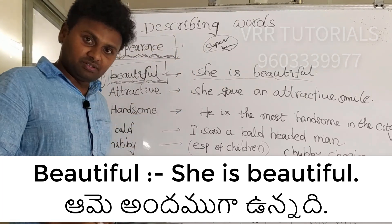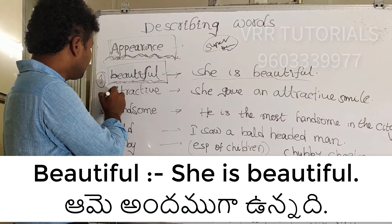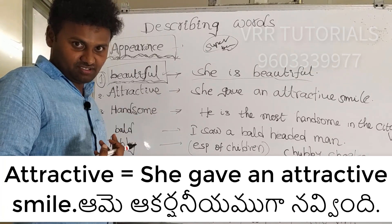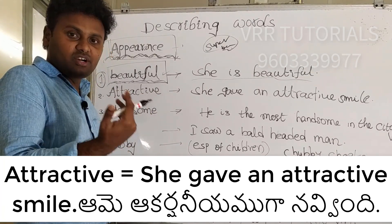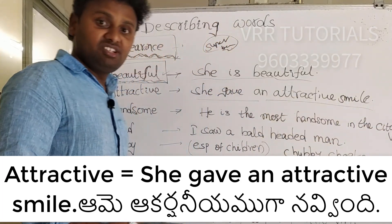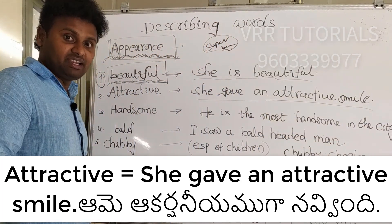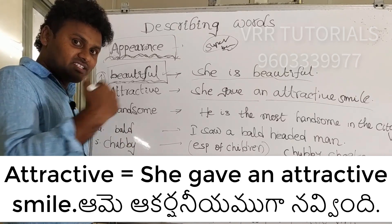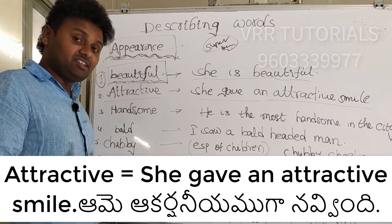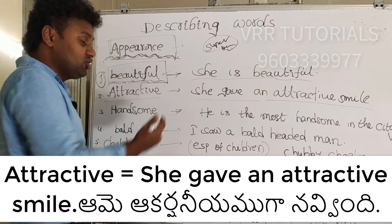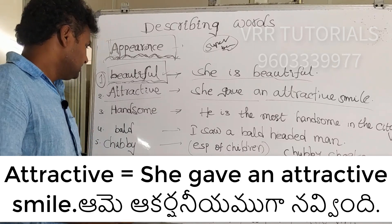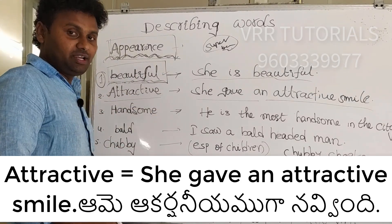The next word is 'attractive'. Attractive means something which attracts. For example: 'I am attracted to you' or 'She gave an attractive smile' — which means you are attracted by her smile. You can also say 'She gave me a beautiful smile.' These words are almost related to each other.